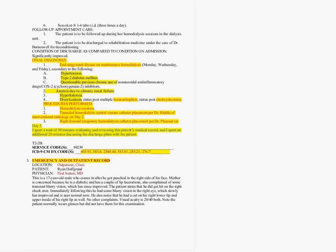The highlighted final diagnosis includes: end-stage renal disease on maintenance hemodialysis, hypertension, type 2 diabetes mellitus, questionable previous chronic use of non-steroidal anti-inflammatory drugs and inhibitors, anemia due to chronic renal failure, hyperkalemia, diverticulosis, post multiple herniorhaphy, and post cholecystectomy. We also see procedures performed — but that's highlighted in red to show we do not code for the procedures. The only thing we're coding for is the discharge.